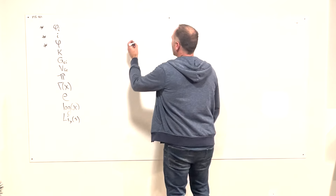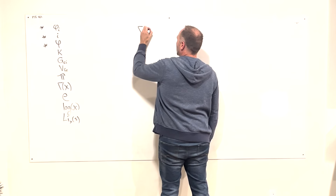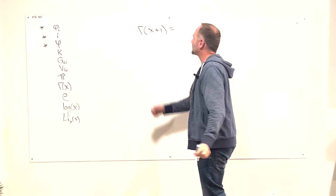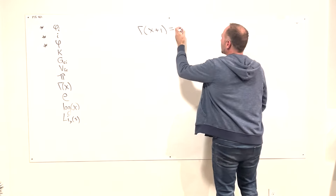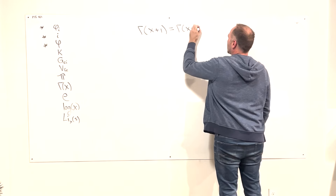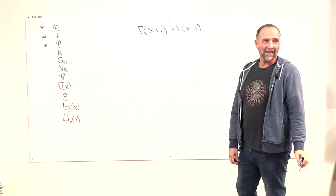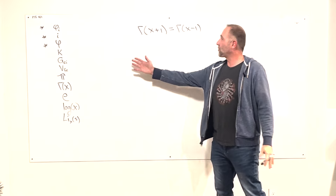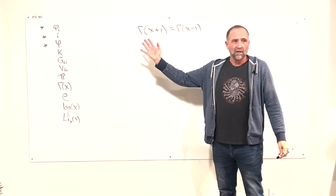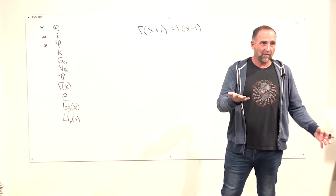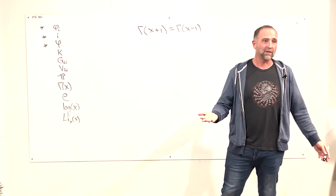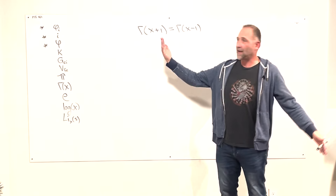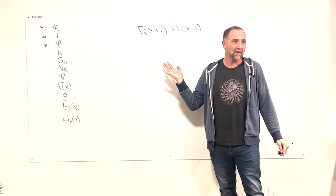The gamma function has an inbuilt symmetry. We set Γ(x+1) equal to itself but in another version. The gamma function is the base function in mathematics for dividing things up, for partitions — the analytically continued version of factorials.